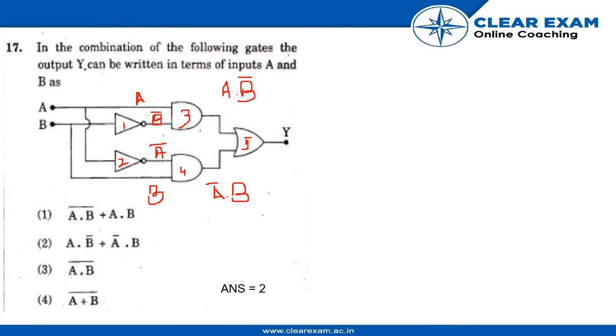Gate 5 is the OR gate. If the inputs of OR gate are A and B, then output is Y equals A plus B. So the output of gate 5 will be A dot B' plus A' dot B, which is our option 2. Thank you.